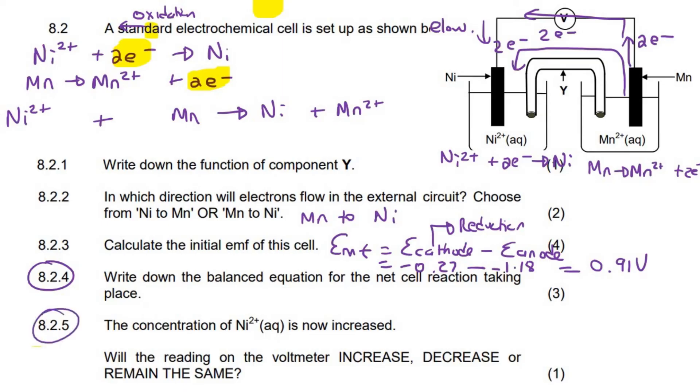So next one says, the concentration of Ni2+ is now increased. How will this affect the voltmeter? It's very easy what you do here. You literally use your knowledge of equilibrium and Le Chatelier. So if this concentration is increased, then what will happen? The system will try to decrease that. How will it decrease this? Well, it'll do that by favoring the forward reaction.